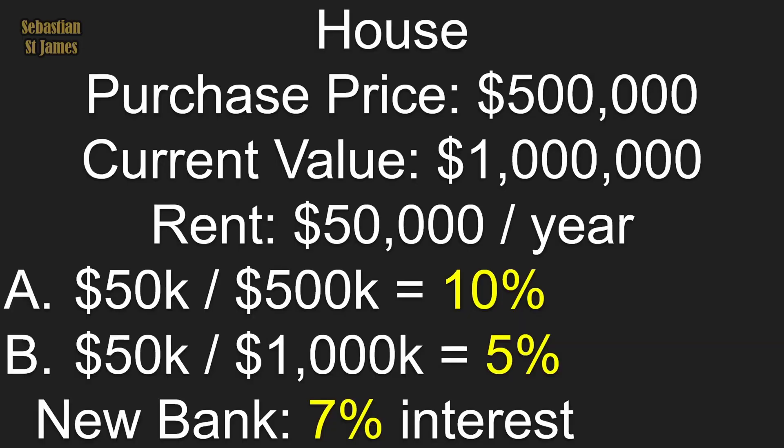With our new understanding, let's go through the original problems. The house: original purchase price $500k, current value $1 million, rent $50,000. Calculated on the original purchase price, that's 10%; calculated on today's value, that's 5%. The new bank is offering 7% interest — should I sell the house and put my money there? Yes, I should, because it's actually 5% I'm getting with my house, not 10%.